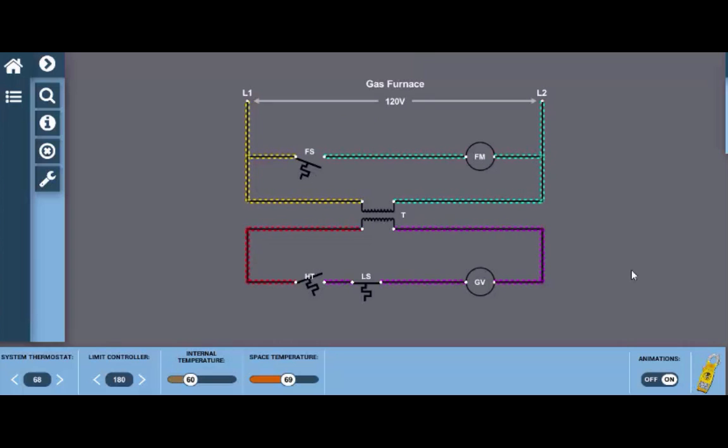So let's take a look here. We're going to select the system thermostat and we're going to turn it up above the space temperature which is currently 69 degrees. So as we turn it up we can see that the heating thermostat closes which allows current flow to the gas valve and now our gas valve is energized and it is sending fuel to the burner which is now ignited and the burner gets to heat the heat exchanger.